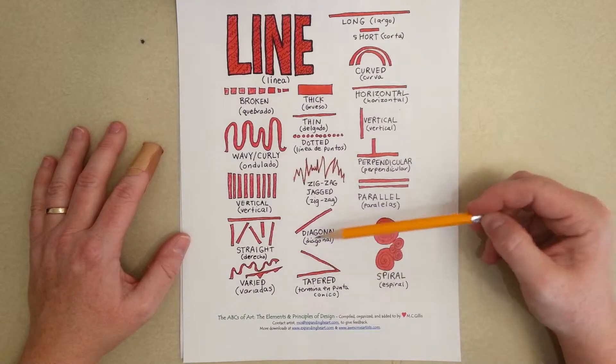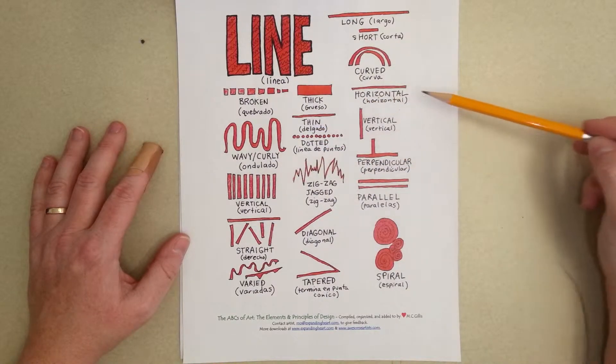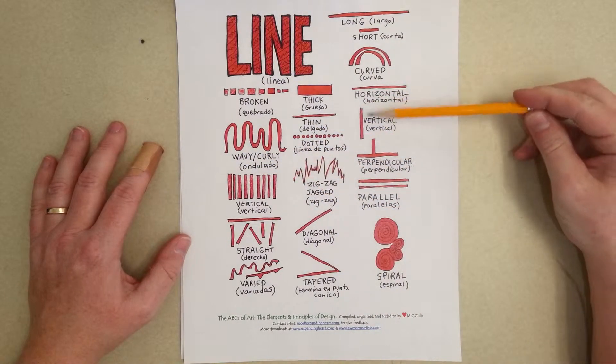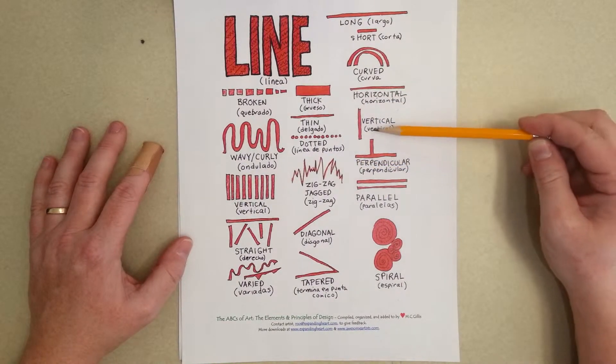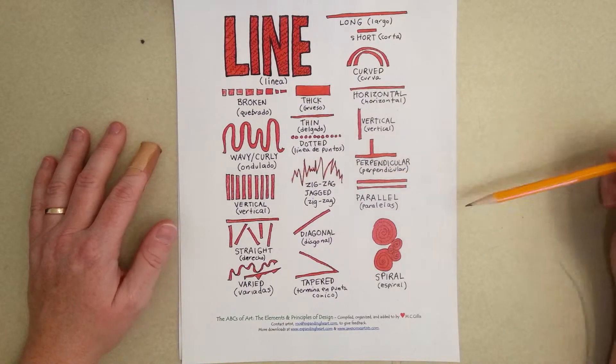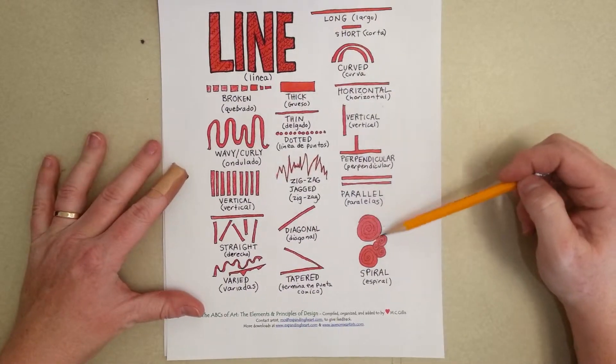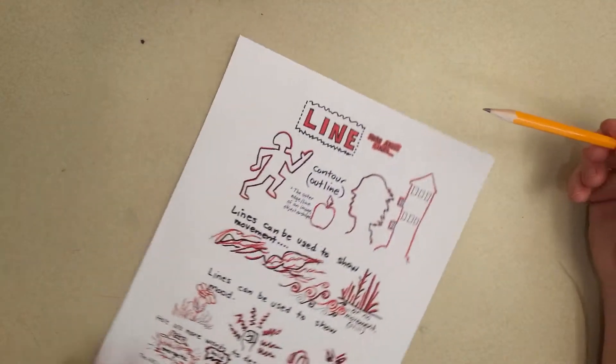You've got tapered lines, or diagonal, zigzag, dotted. Horizontal, which goes with a horizon, or vertical, which is up and down. Perpendicular, which is when one line forms a right angle with another one. Parallel lines are right next to each other but never touching. Spiral lines. So these are some different ideas of what lines can look like.